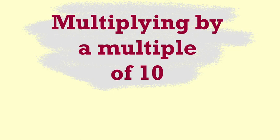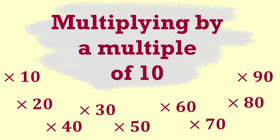Multiplying by a multiple of 10. Multiples of 10 are 10, 20, 30, 40, 50, 60, etc. Anything with a 0 in the ones place is a multiple of 10.